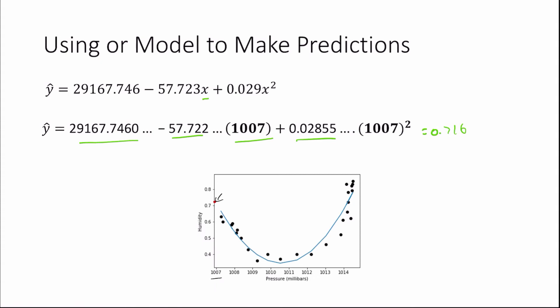So at a pressure of 1007, we can expect a humidity of 0.716, which seems very reasonable, because if we were to continue this quadratic relationship, it would end up around there, which is what we want.